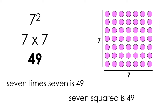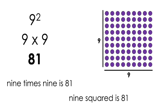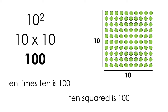ooh na na. 7 times 7 is 49, 7 squared is 79. 8 times 8 is 64, 8 squared is 69. 9 times 9 is 81, 9 squared is 18. 10 times 10 is 100, 10 squared is 100.